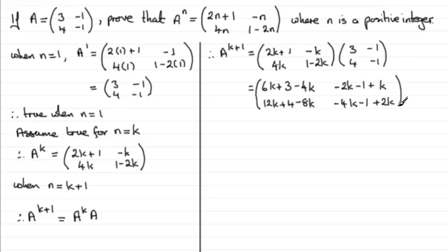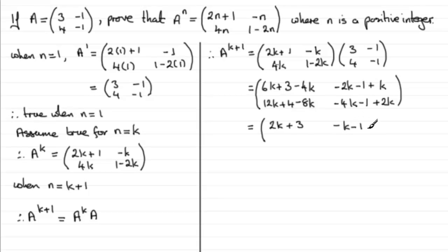Tidying up each element: the first gives 2k+3, the second gives -k-1, the third gives 4k+4, and the last gives -2k-1.